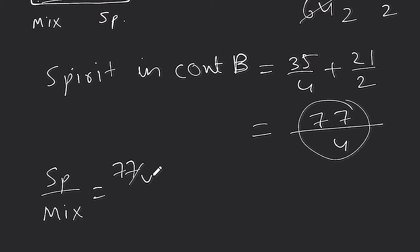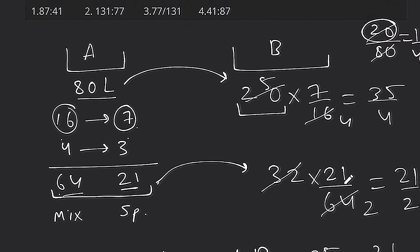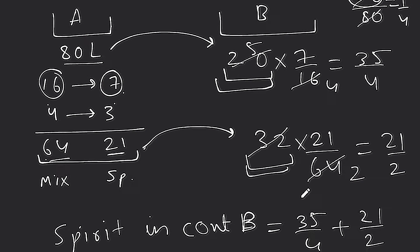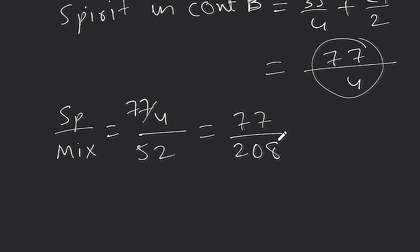Total mixture transferred to container B is 20 liters plus 32 liters, so total is 52 liters. Therefore spirit to mixture ratio is 77 by 4 divided by 52, which equals 77 by 208.